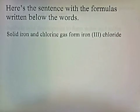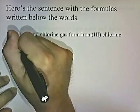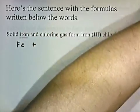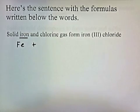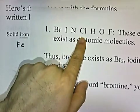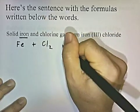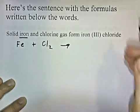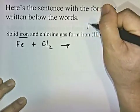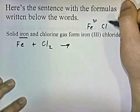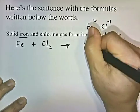Here's the sentence we asked you to convert: solid iron and chlorine gas form iron 3 chloride. Metals — and iron is a metal — you just write the symbol Fe. Chlorine is part of Brinkelhoff, so when we write the formula for chlorine, we write Cl2. For iron 3 chloride, iron 3 means Fe with a plus 3 charge. Chloride is in group 7 on the periodic chart, so it has a negative 1 charge. Crisscrossing the numbers, you get FeCl3.